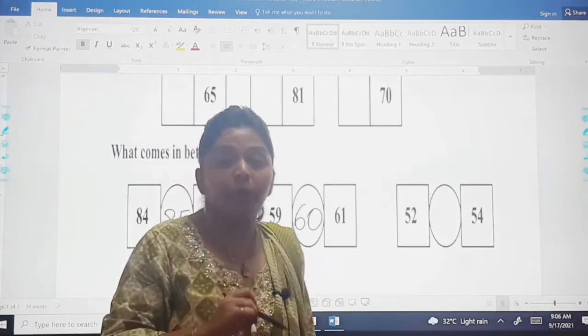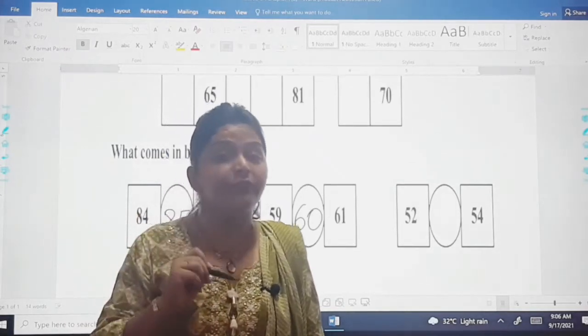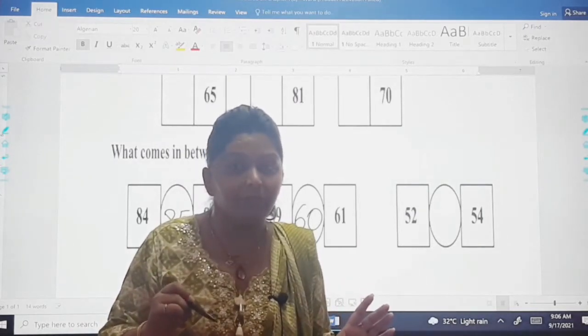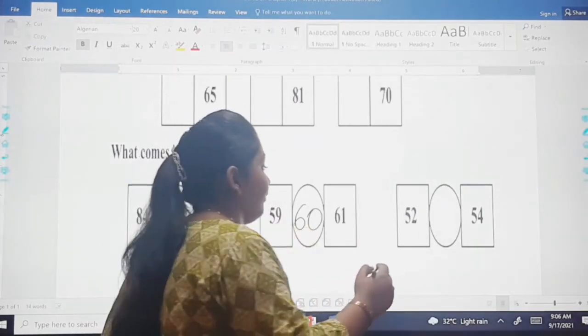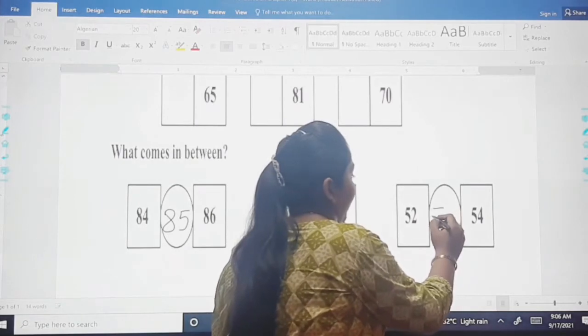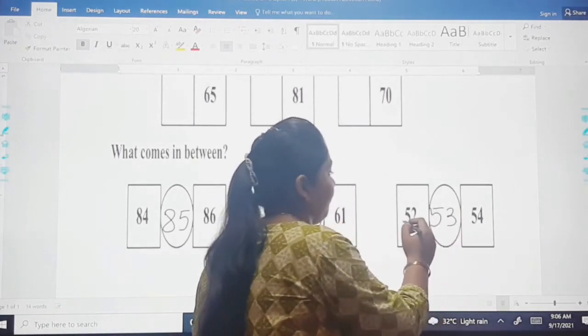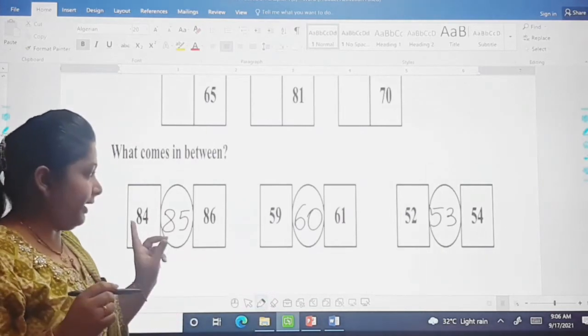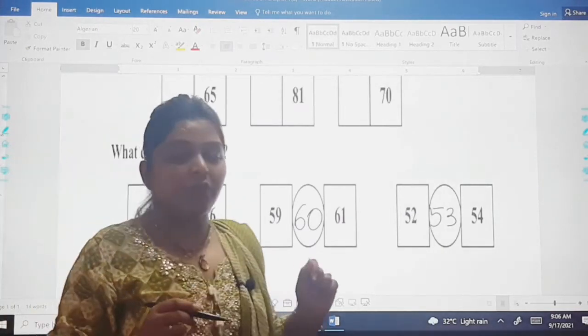Then between 52 and 54, which number will come? Between 52 and 54, one number is missing and which is that number? That is your number 53. So are you all clear with this?